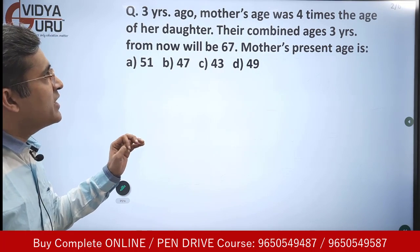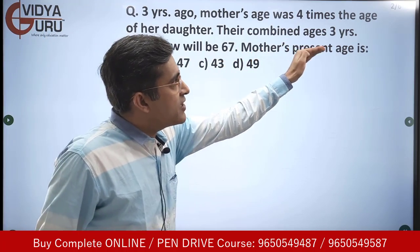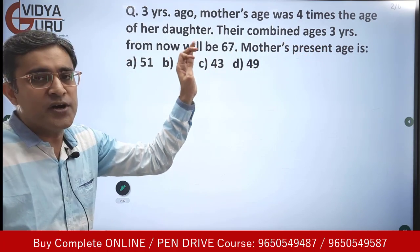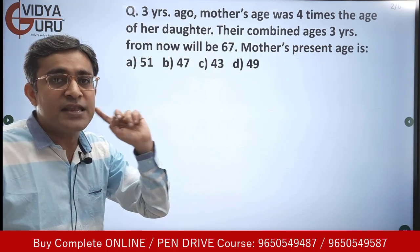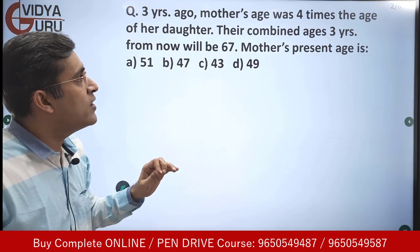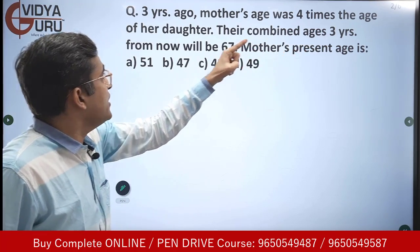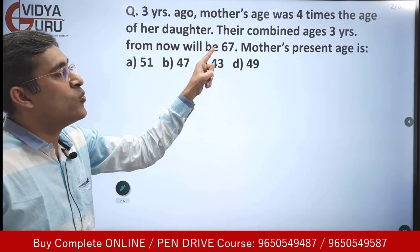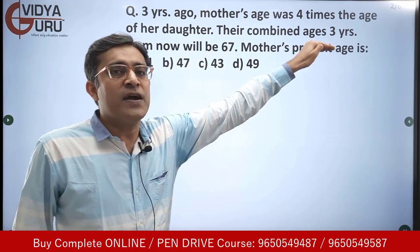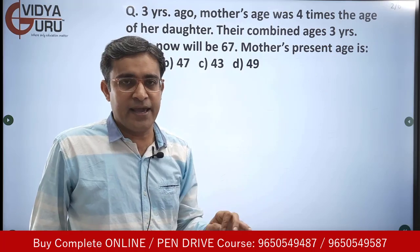Let's read what is given on your screen. Three years ago, mother's age was four times the age of a daughter — that was the scenario three years ago. Their combined ages three years from now will be 67. We have to find out the mother's present age.